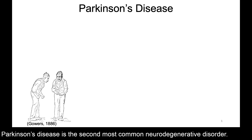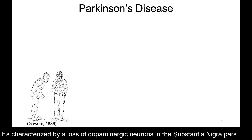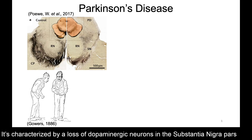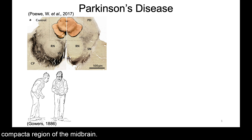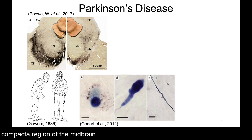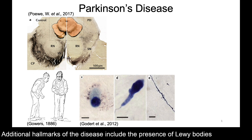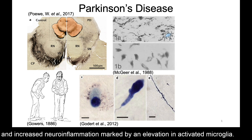Parkinson's disease is the second most common neurodegenerative disorder. It's characterized by a loss of dopaminergic neurons in the substantia nigra pars compacta region of the midbrain. Additional hallmarks of the disease include the presence of Lewy bodies and increased neuroinflammation marked by an elevation in activated microglia.